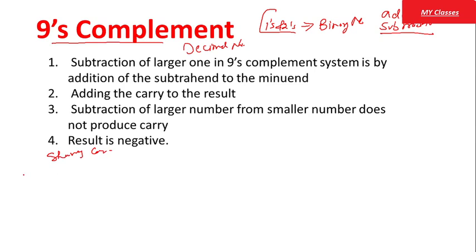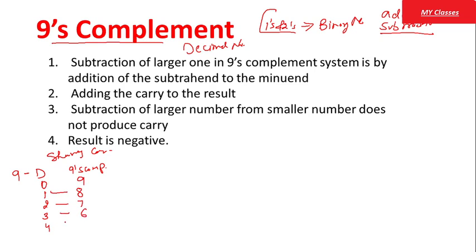9's and 10's Complement — तो decimal numbers हमारे पास हैं: 0, 1, 2, 3, 4 और आगे। 9's Complement of 0 is what? जब हम decimal number को 9 से minus करेंगे, तो वो बन जाएगा हमारा 9's Complement। तो 0 का 9, 1 का 8, 2 का 7, 3 का 6, 4 का 5 — and so on। यह हो गया 9's Complement calculate करने का method।